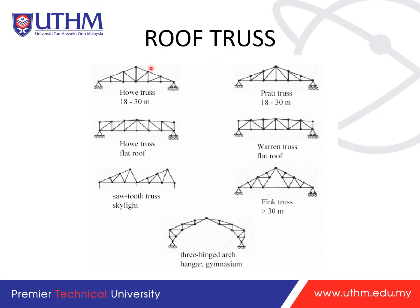There are several types of roof trusses. Common ones include the Howe truss and Pratt truss for 18 to 30 meter spans. For flat roofs, there are flat roof Howe trusses and Warren trusses. Other types include skylight trusses, Fink trusses, and three-hinge arch trusses. There are many types and you can explore more on your own.